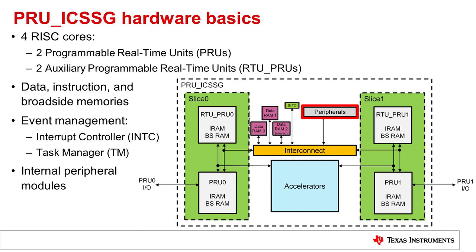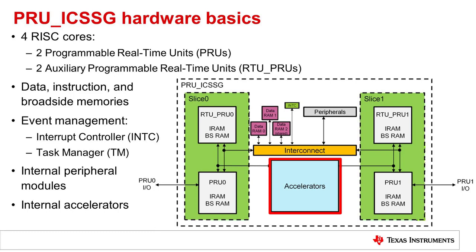Similar to the PRU-ICSS, the PRU-ICSS-G has several integrated peripherals. By integrating the peripherals, the PRU read-write access latency is significantly reduced compared to external SOC-level peripherals. Lastly, the PRU-ICSS-G adds a number of integrated hardware accelerators. These accelerators assist with data processing or data movement, and are useful to achieve both real-time and gigabit speeds.